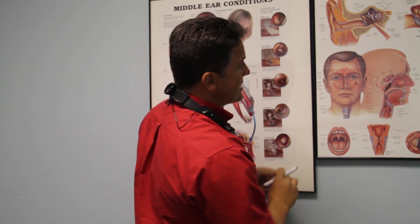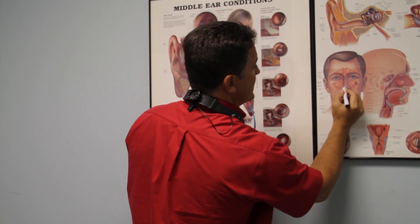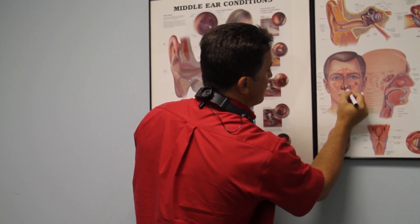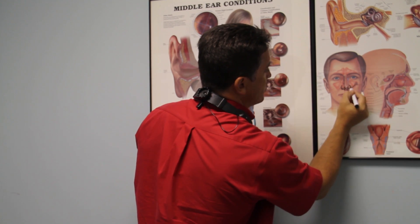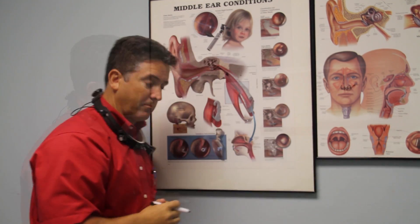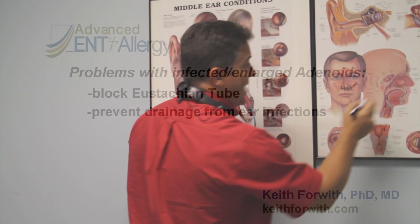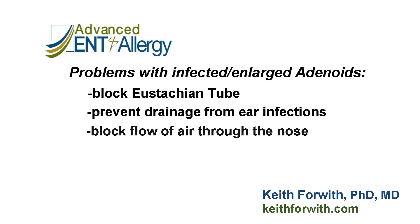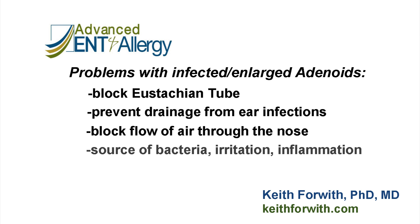If we look at it from the front side, the adenoids are way up here in the back of the nose, and big adenoids would block that eustachian tube and not allow it to drain properly. Adenoids, if they're enlarged, can block the flow of air through the nose and can be a source of bacteria and irritation and inflammation that can lead to a chronic runny nose.